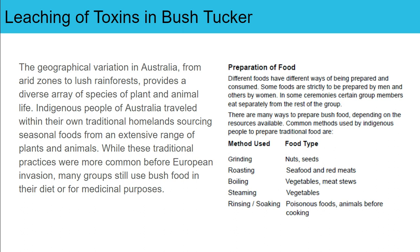In different areas of Australia there are different types of geographical variation — from arid zones to lush rainforests — with a diverse array of plant and animal species used for hunting, eating, and a range of other things. Indigenous people of Australia travelled around in their traditional homelands sourcing seasonal foods, and this knowledge was kept within the community about which plants they would see, when they would see them, and what that meant for the seasons. These traditional practices became less common after European invasion, but many groups still use bush food in their diet or for medicinal purposes.